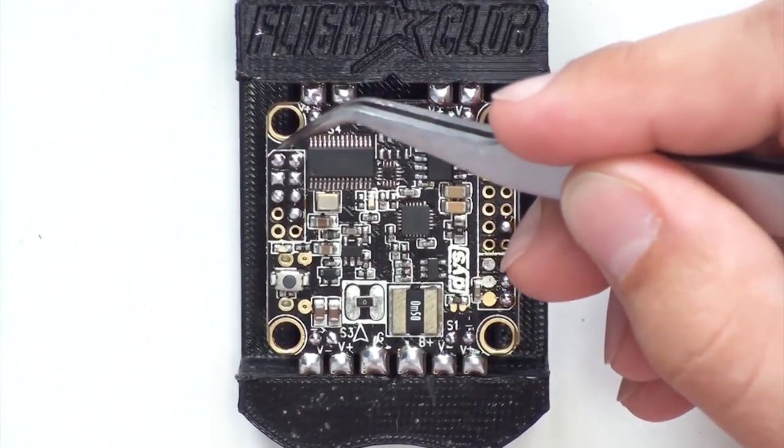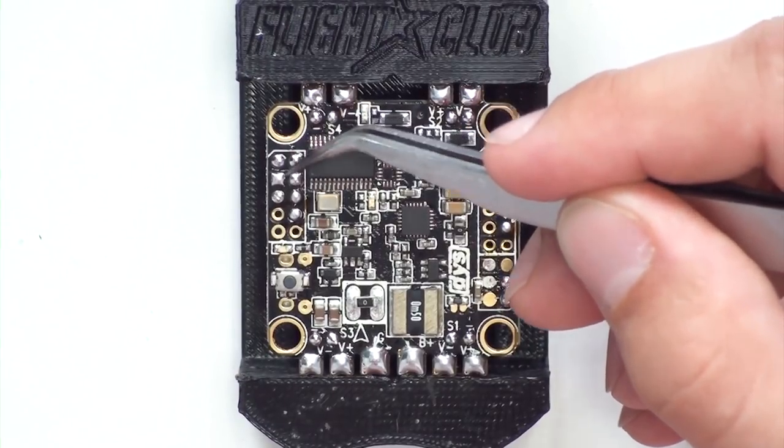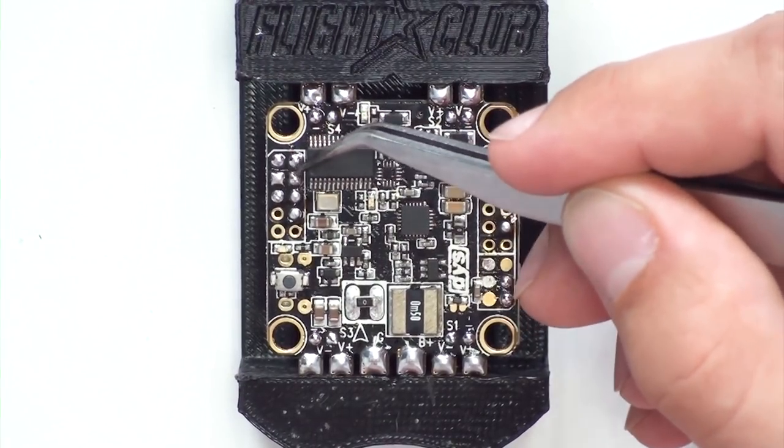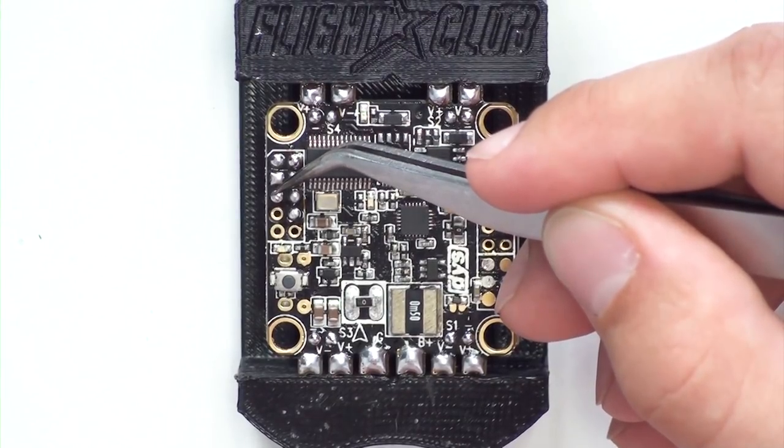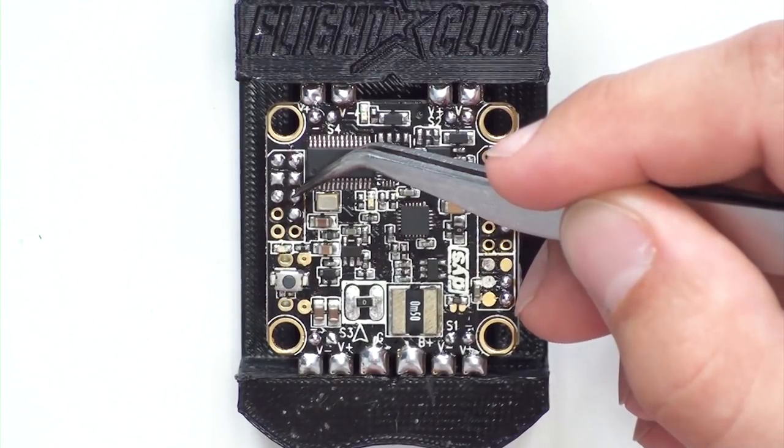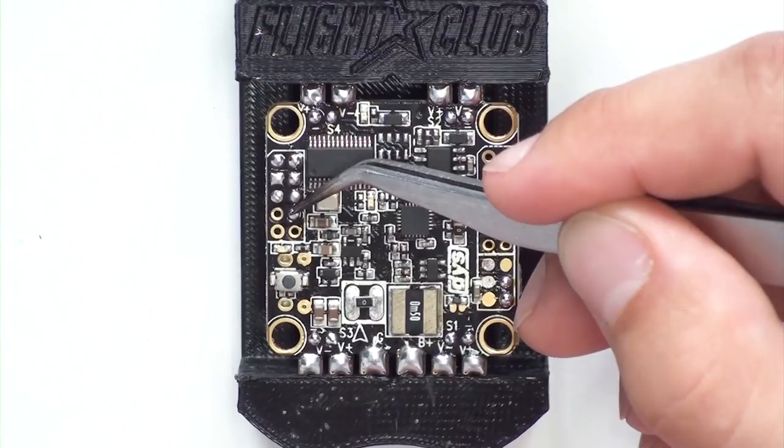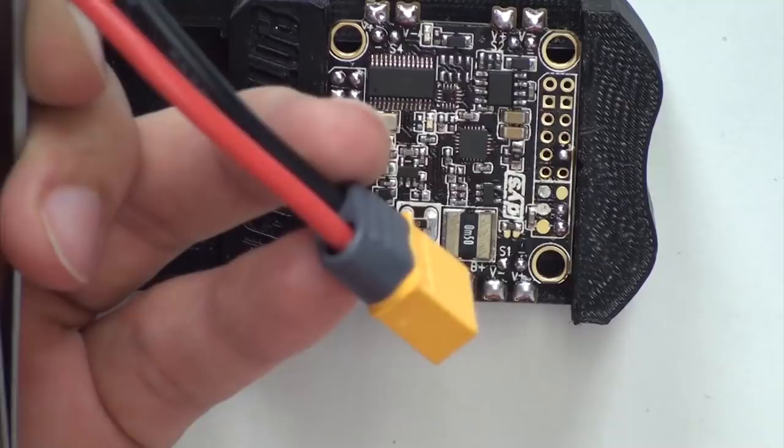To go over all the solder points for the VTX and camera: we have the two top being the grounds, the second two being 5 volts each, the left side being video out for the VTX, the right side being video in that comes from the camera, and then right below that we have a TX6 port which is going to be the port we're using for smart audio with the VTX.